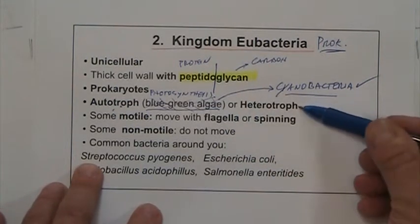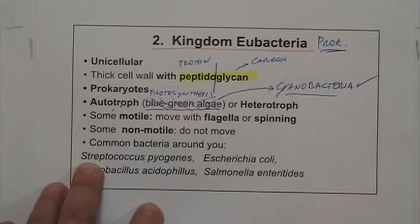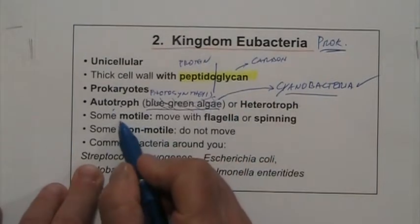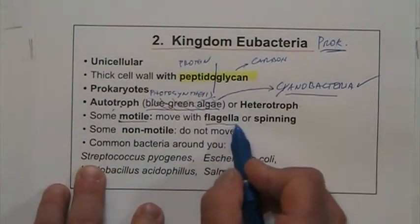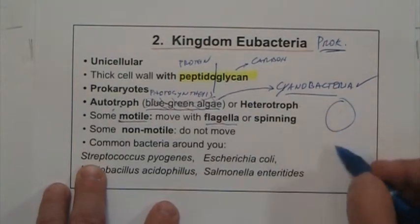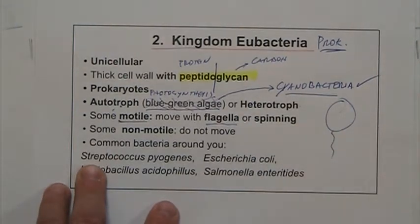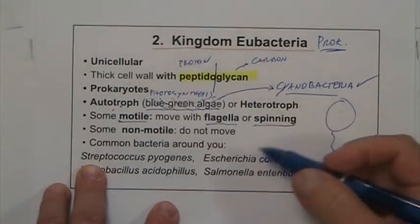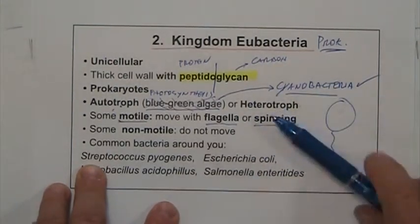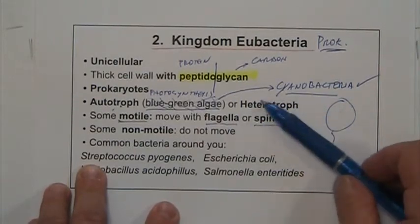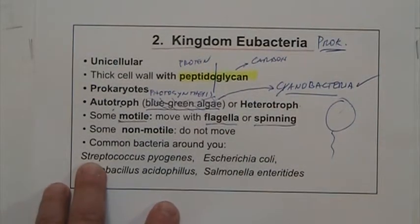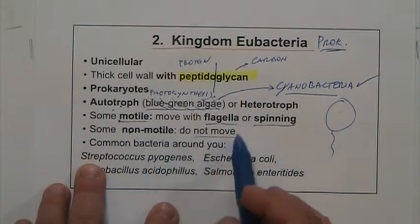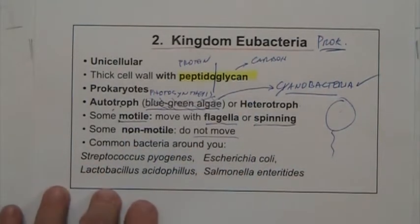Of course, Eubacteria can also be heterotrophs, eating other things. Some are motile, meaning they move using flagella, or some have a spinning motion and can move like swimming. If they are non-motile, they do not move.